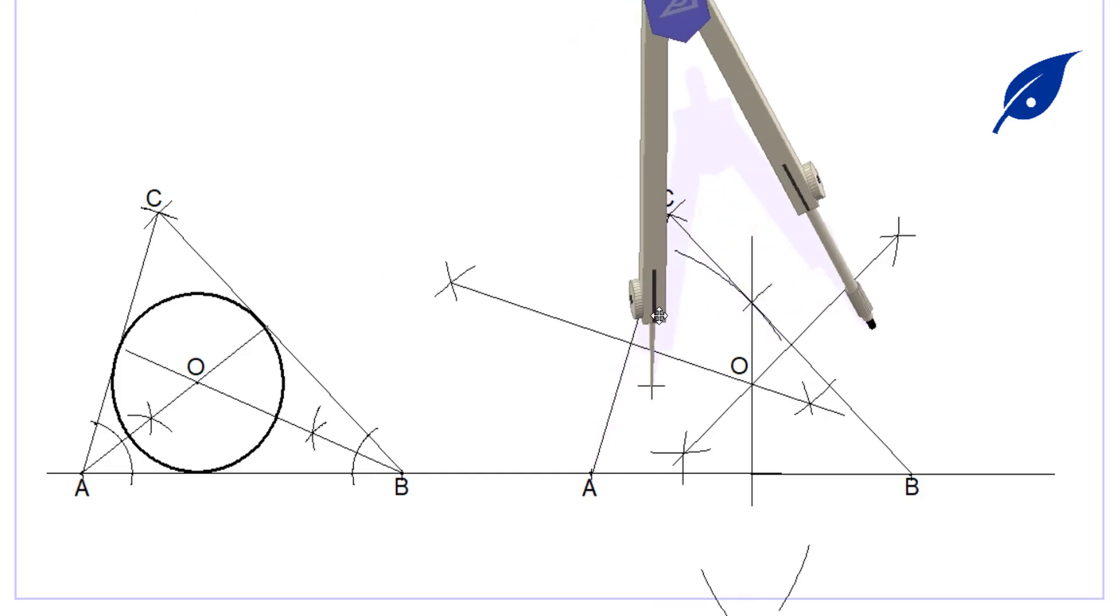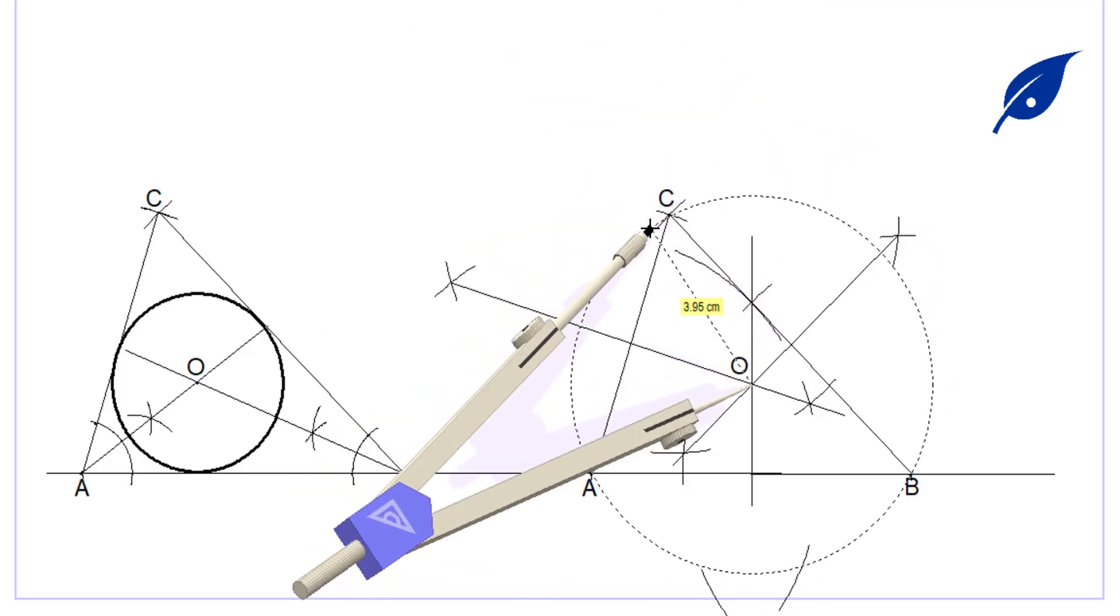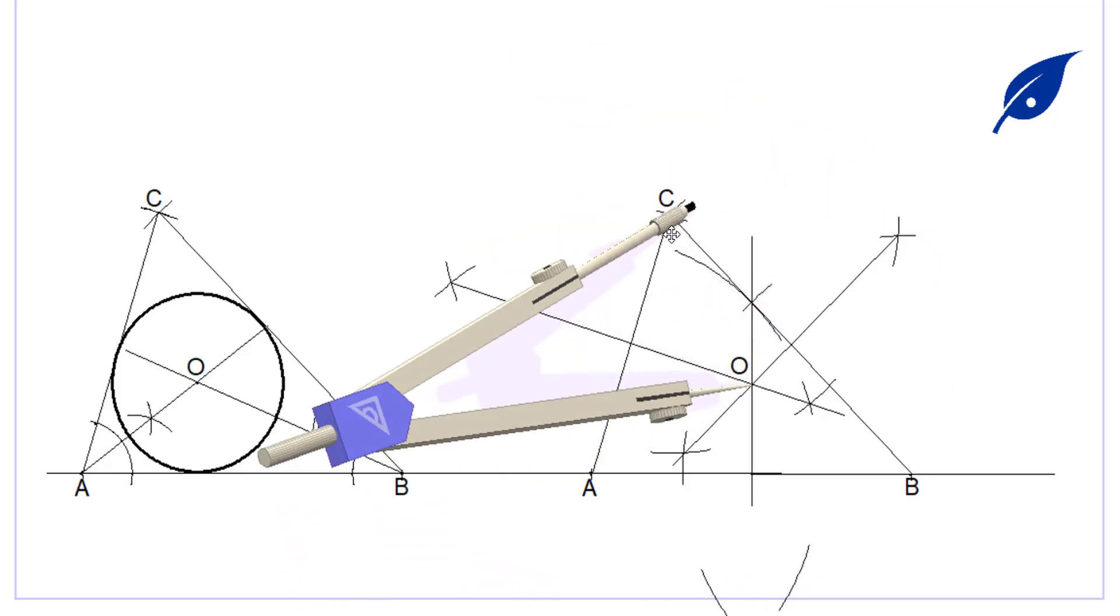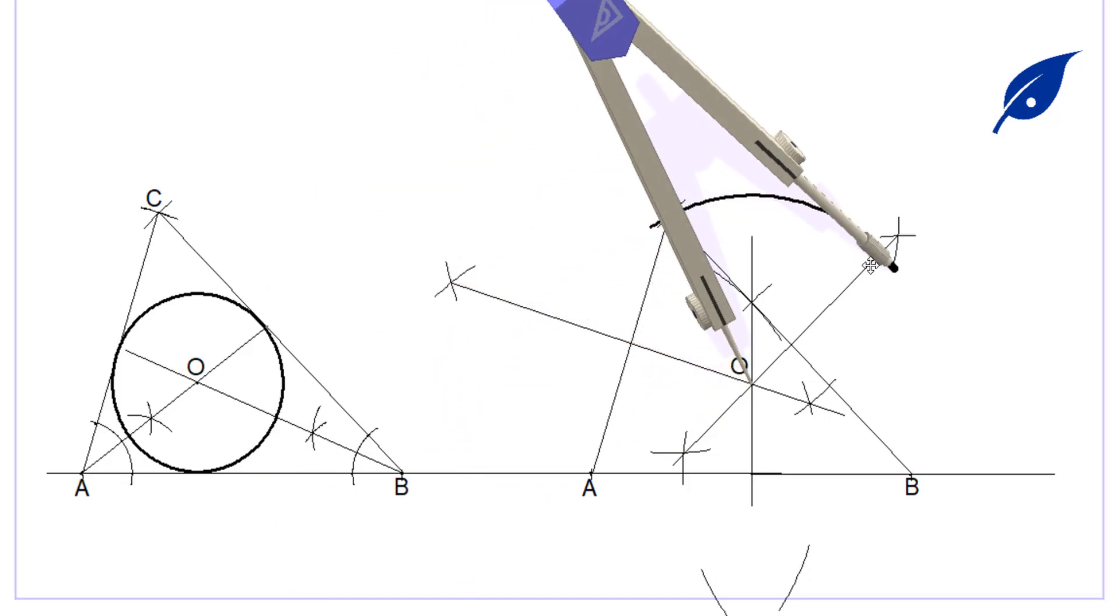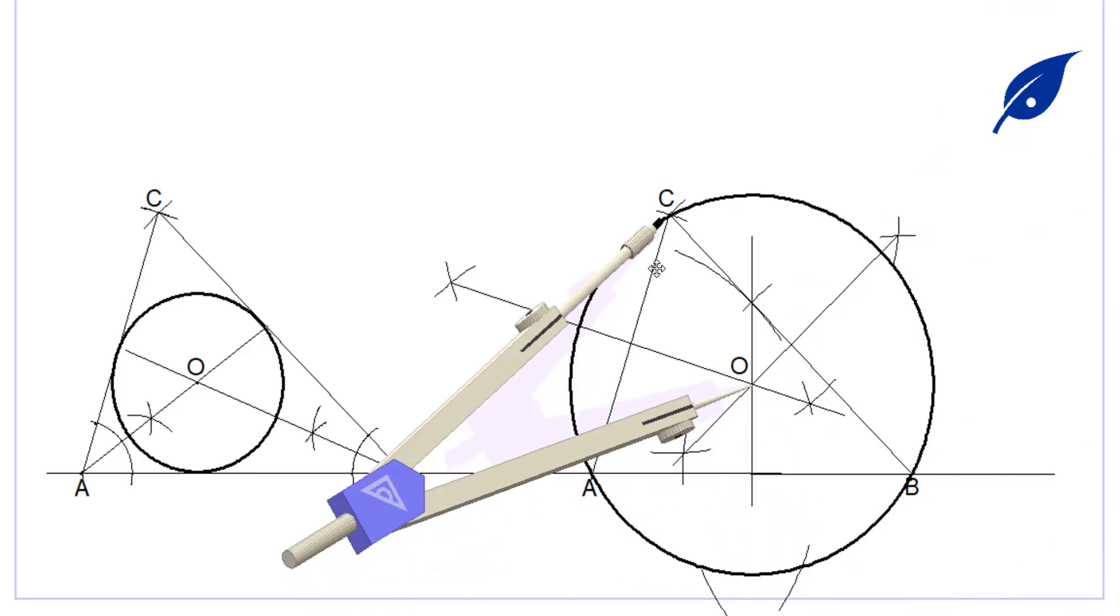Then fix the center of the compass on that point, and the radius will be OC. You can select the radius to be OA or OB, but make sure the three points are connected. After doing that, draw a circle, which is the required circle for circumscribing.